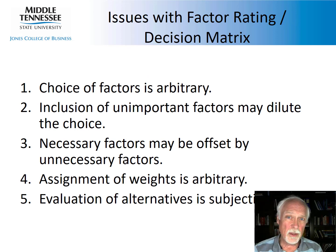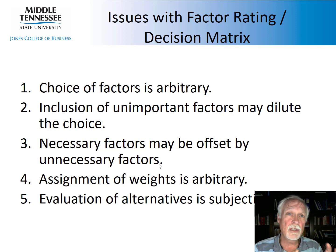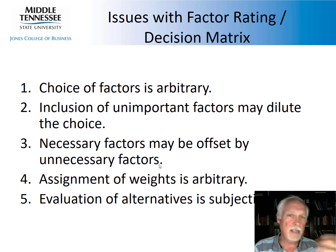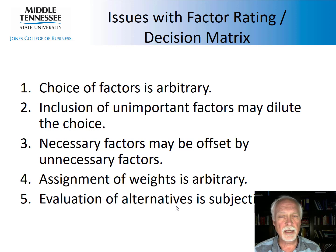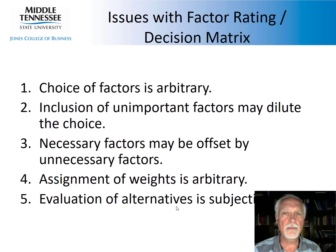It's probably already apparent that there are issues with this system. The choice of factors is arbitrary. Inclusion of unimportant factors might dilute the choice, and necessary factors might be offset by unnecessary ones — a factor that if absent kills the whole decision may be outweighed by smaller factors with really good scores. Assignment of weights is arbitrary, and the evaluation of alternatives is subjective. One way to get past this in a team environment is to score individually, then come together, compare scores, and discuss the differences — that's how I've worked it in industry.